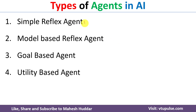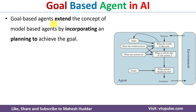In the previous videos I have discussed simple reflex agent and model-based reflex agent — the link for those videos is given in the description below. In this video I will discuss goal-based agents. Goal-based agents are an extension of model-based reflex agent by incorporating planning to achieve the goal.